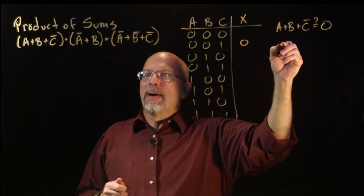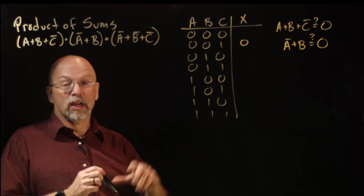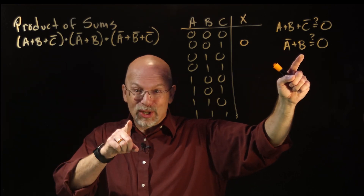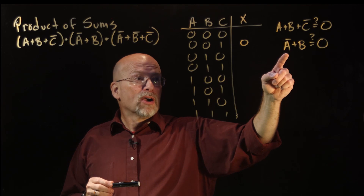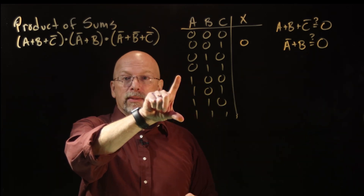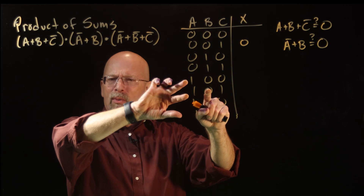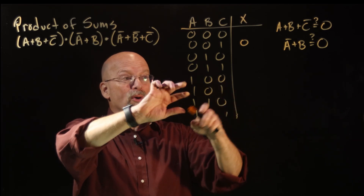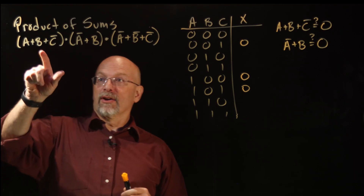What about Ā or B? When is this equal to zero? It's equal to zero for a two-input OR gate when zero or zero — so when Ā is zero and B is zero. Ā being zero means A has to be one, so we're in the bottom half of the truth table. B has to be zero, so we're in these two rows where A is one and B is zero. Since C is not part of that sum, it can be whatever it wants — zero or a one. So this term puts a zero in both of those rows.